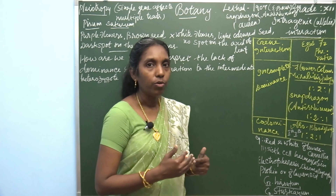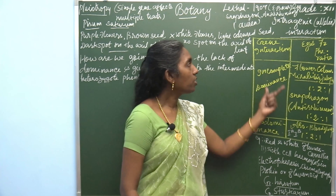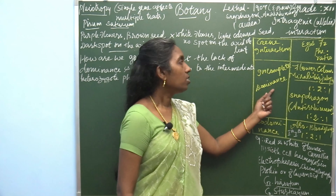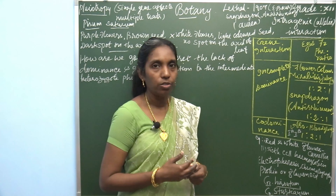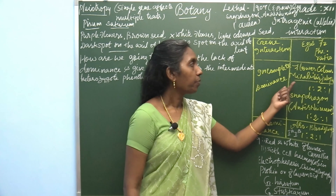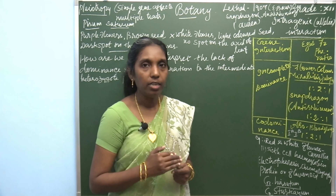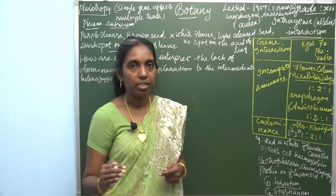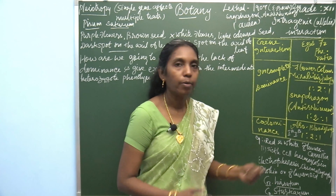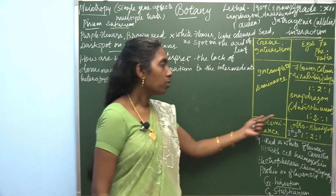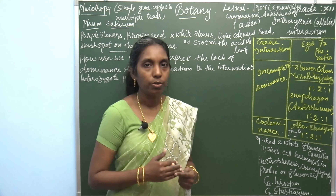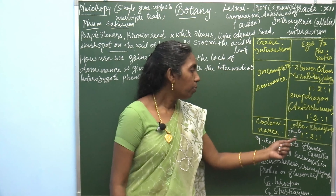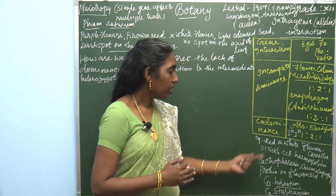Let's review what we learned under intragenic interaction. The other name is allelic interaction. The example of incomplete dominance is the color of the flower in Mirabilis jalapa, which produces a 1:2:1 ratio. Another example is snapdragon, called Antirrhinum, which also produces 1:2:1. Another example under intragenic interaction is codominance — the example is the ABO blood group.